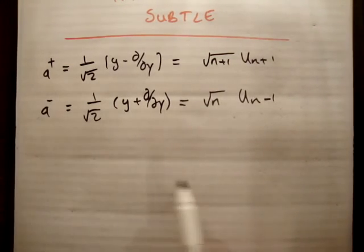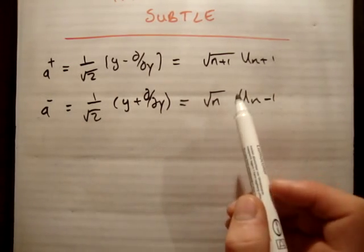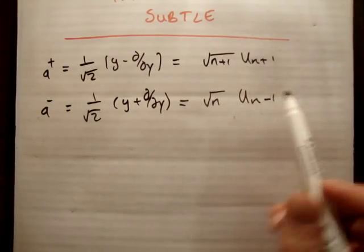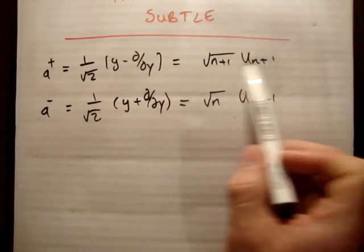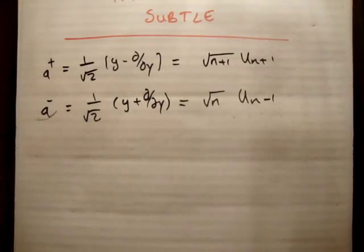Whereas A-, you started out with un, so what you did here is, you rooted it, and then you lowered it. So the A+ raised it and then rooted, whereas the A- rooted then lowered it.